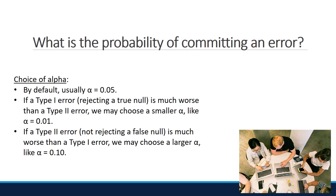What is the probability of committing an error? The probability of making a Type 1 error — rejecting a true null — is the significance level alpha. The consequences of the potential errors may motivate the choice of alpha before conducting a hypothesis test. Generally, by default we use alpha equal to 0.05. If a Type 1 error is much worse than a Type 2 error, we may choose something smaller like alpha equal to 0.01, whereas if a Type 2 error is much worse than a Type 1 error, we may choose something larger like 0.1.